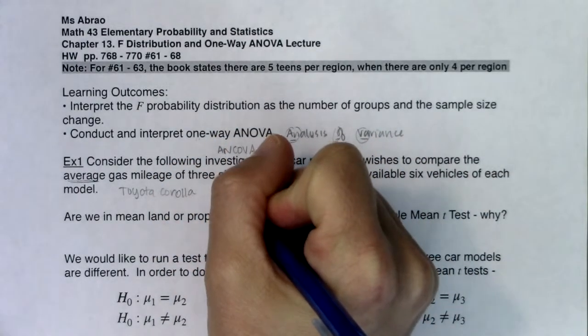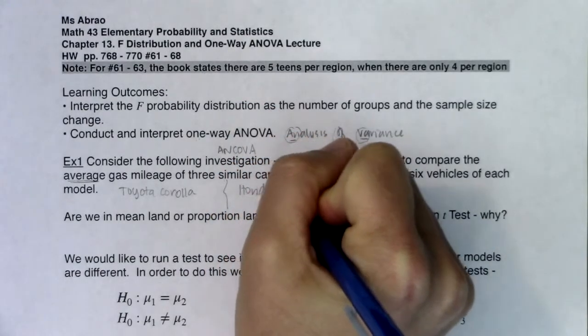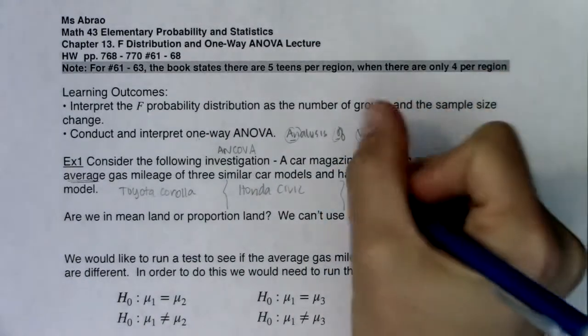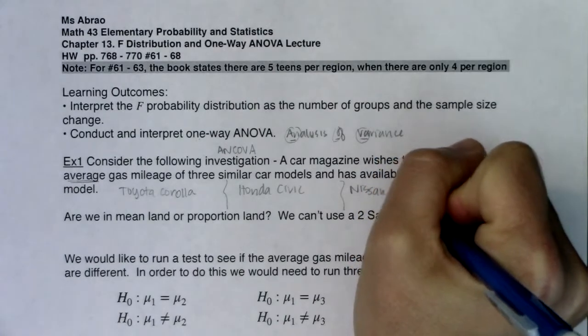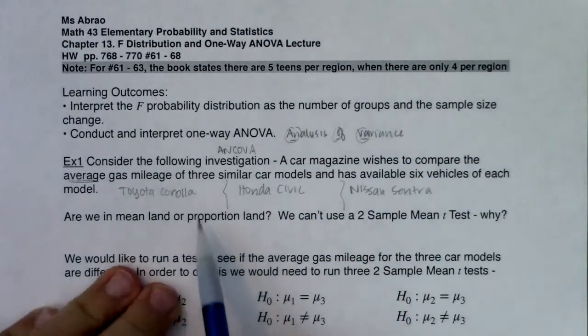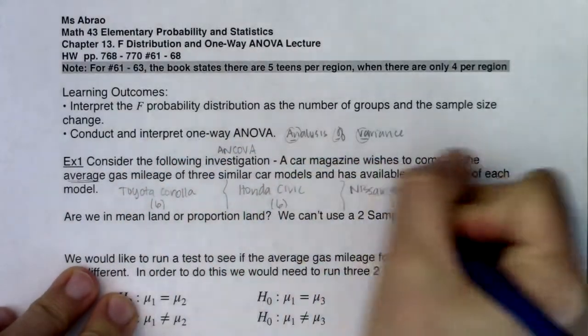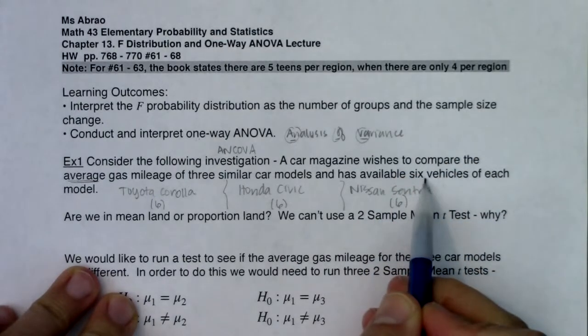What's comparable to a Corolla? Over on the Honda, I know they have the Honda Civic. What's another car company out there? I think the Nissan Sentra maybe? I don't know enough about cars that are comparable to the Corolla. But imagine you had six Corollas, you had six Civics, and six Sentras, right, because that's what they're saying, you have six vehicles of each model.